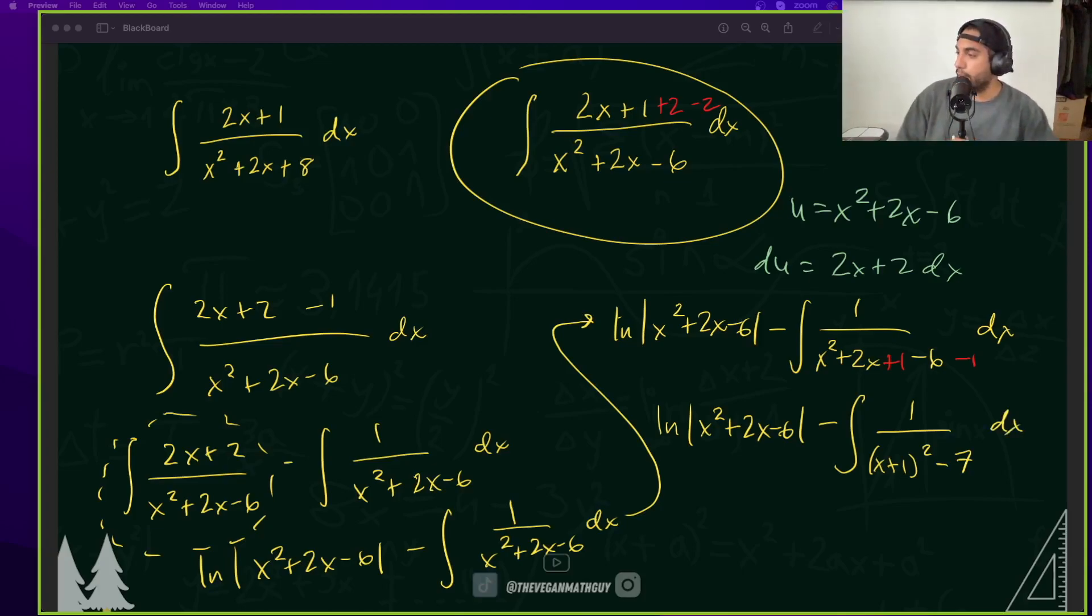And there you go. And if I made any mistakes, please let me know in the comments. But if you notice here, this is instead of a u squared plus a squared that will be in arctan, this is a u squared minus a squared. And that is a very special type of integral that I'm just going to go ahead and write out here.